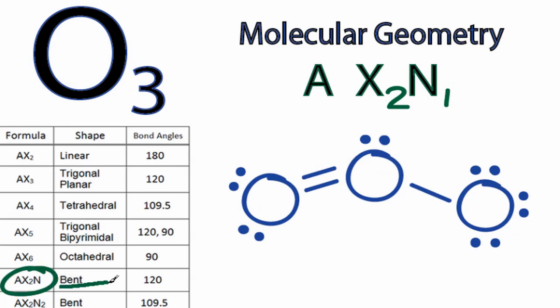And that says it's bent with 120 degrees as the bond angle. So this bond angle right here is 120. A more exact bond angle might be 116. That's a little bit more exact for the O3 Lewis structure.